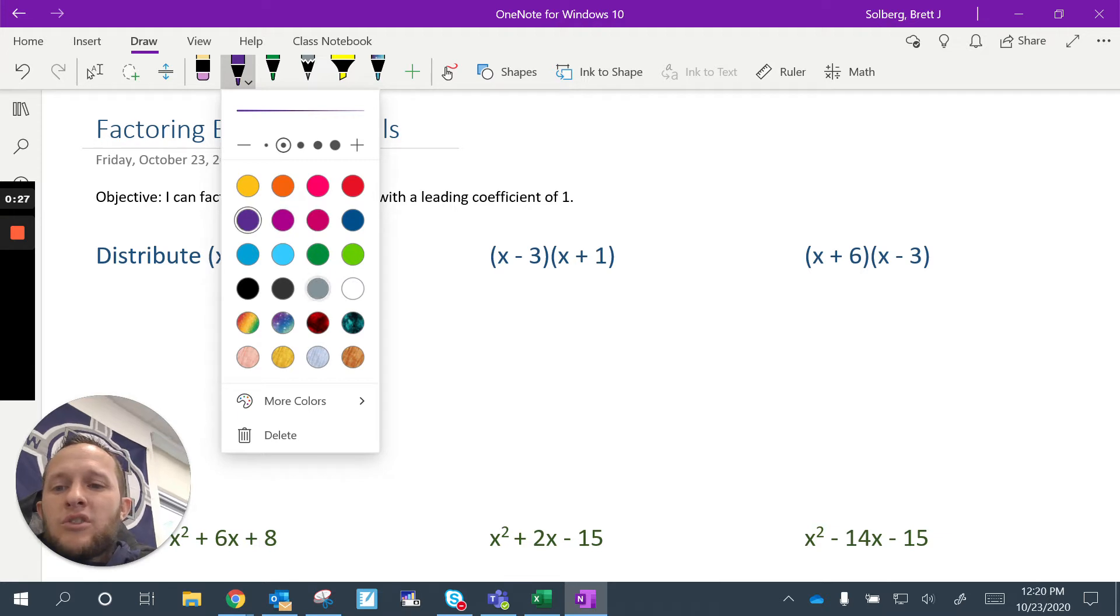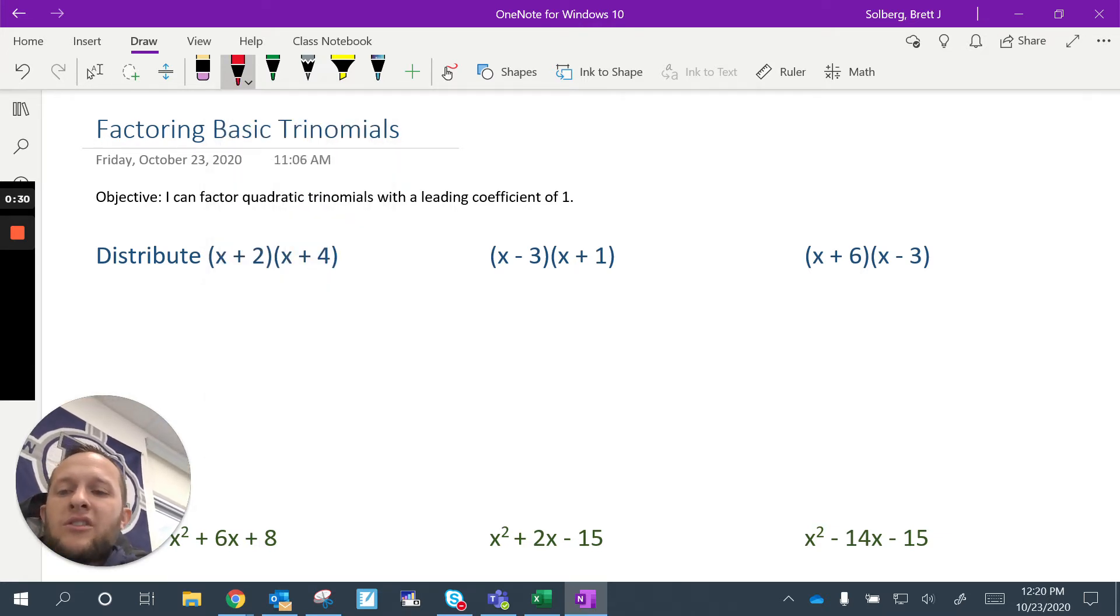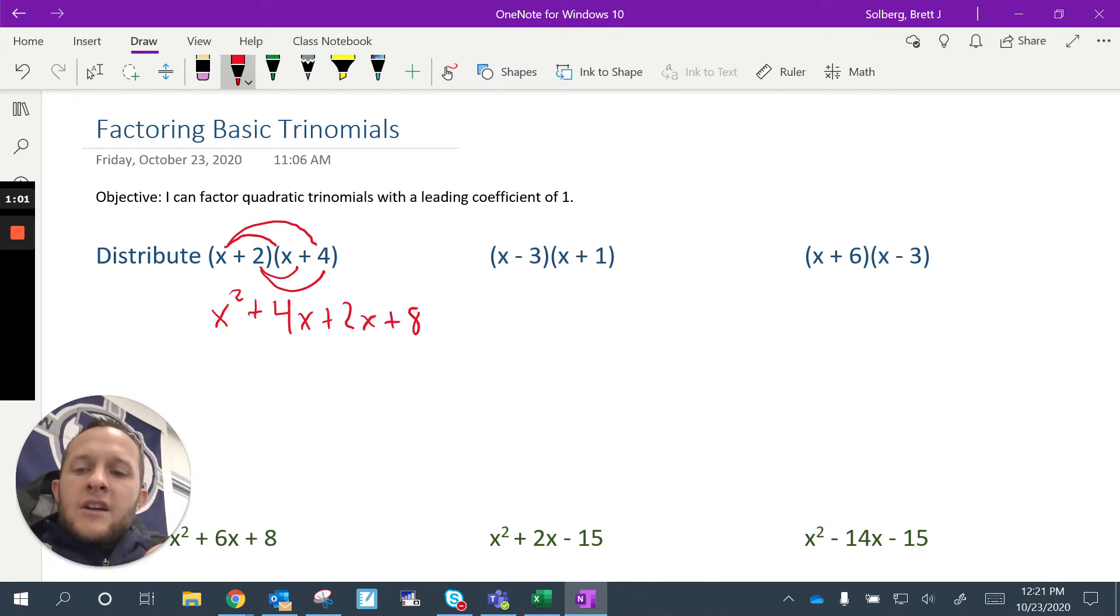So let's say I was given this binomial times a binomial, and I want to distribute or multiply this out. What you'd probably say is you need to distribute or FOIL, but what I call this is the lobster claw. See how that looks like a lobster claw? x times x plus 4 gives me x² plus 4x. Then I'm going to distribute 2 to the x plus 4, that gives me 2x plus 8. Now I'm going to combine like terms here, 4x plus 2x is 6x, and I get it distributes to x² plus 6x plus 8.